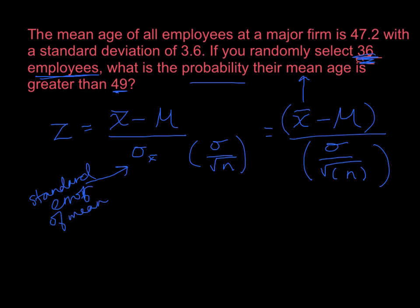Let's plug it in with the numbers from this problem. So I want the probability that the mean age is greater than 49. So 49 is my boundary. And I've got to subtract the population mean, which is right there in the first sentence. The mean age of all employees, that's population, is 47.2. So that's my population mean. In my calculator, I'm going to do that with parentheses around the top. I'm going to hit divided by. I'm going to open a set of parentheses.